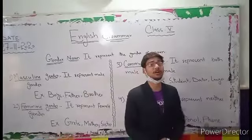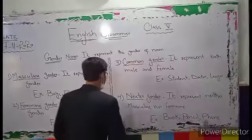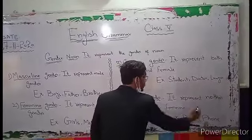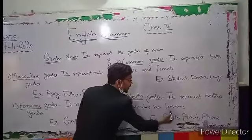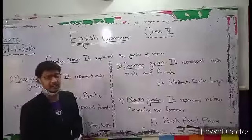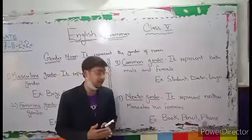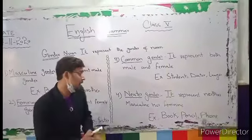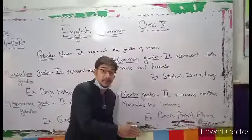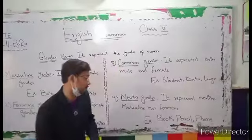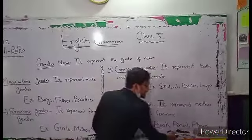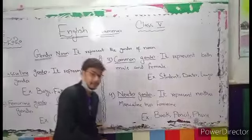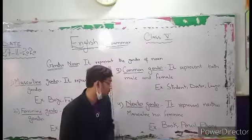The fourth type is Neuter Gender. It represents things that are neither male nor female — objects. For example: Pencil and Foam are neither male nor female.